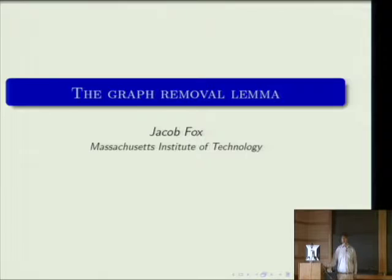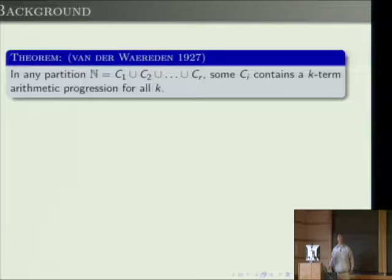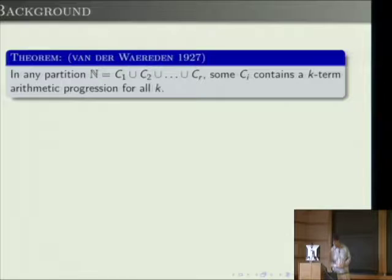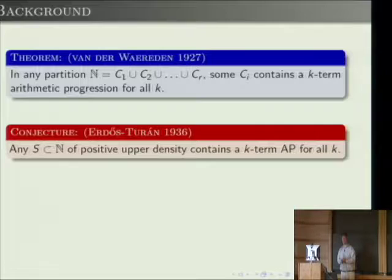I'll be talking about the graph removal lemma, and I'll start with some background from number theory, which is quite old. A classic theorem of Van der Waerden says that in any partition of the positive integers into a finite number of classes, one of the classes contains a k-term arithmetic progression for all k.